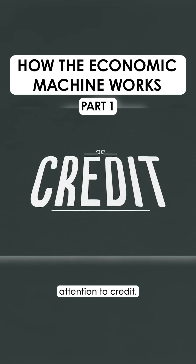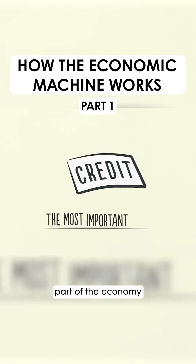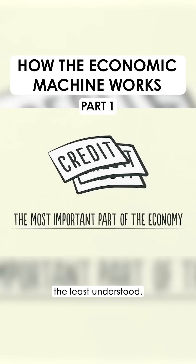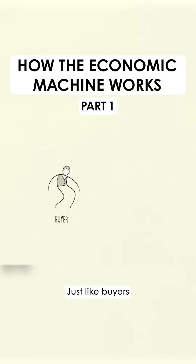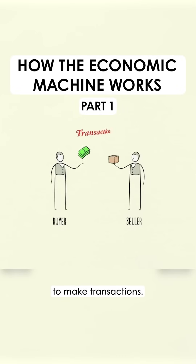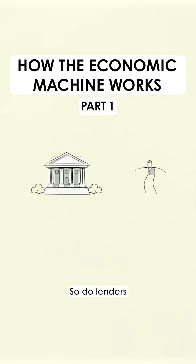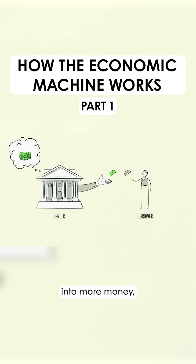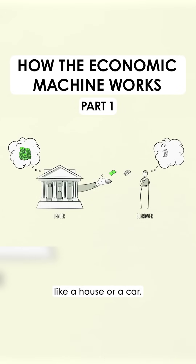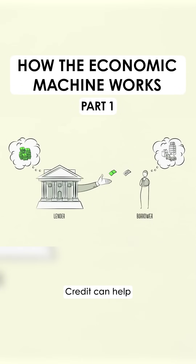I want you to pay attention to credit. Credit is the most important part of the economy and probably the least understood. It's the most important part because it's the biggest and most volatile part. Just like buyers and sellers go to the market to make transactions, so do lenders and borrowers. Lenders usually want to make their money into more money. And borrowers usually want to buy something they can't afford, like a house or a car, or they want to invest in something like starting a business. Credit can help both lenders and borrowers get what they want.